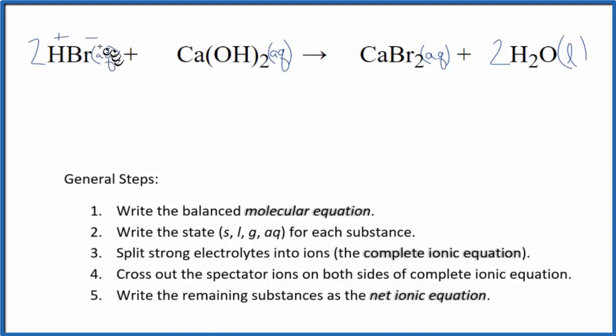Bromine forms 1 minus ions. So we have 2 hydrogen ions, and I'll write aqueous at the end, I won't write that for each one right now, plus 2 bromide ions. Calcium, that's in group 2, 2 plus, and the hydroxide ion, the whole thing is 1 minus.